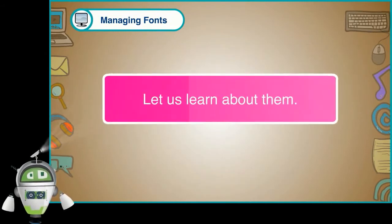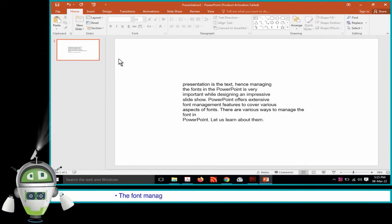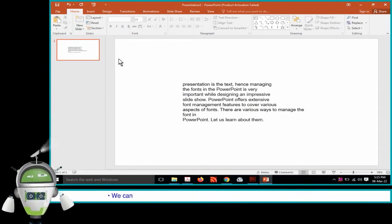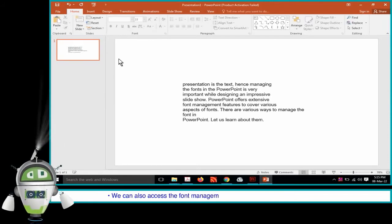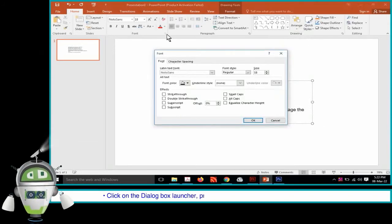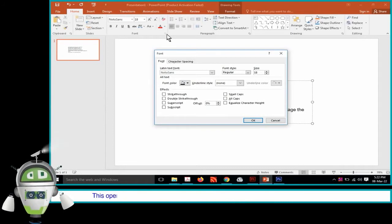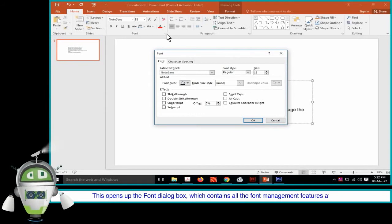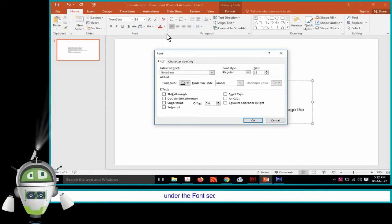The font management can be accessed on the Home tab in the Font group. We can also access the font management features by selecting a text box, right-clicking and selecting the required feature. Clicking on the dialog box launcher at the bottom-right corner of the Font group opens up the Font dialog box, which contains all the font management features.